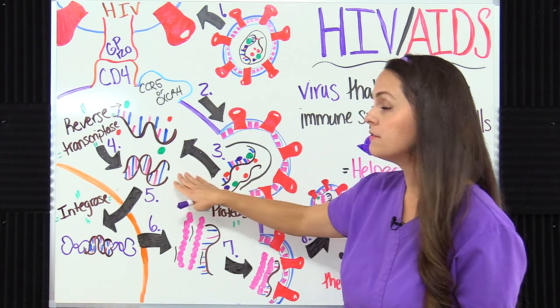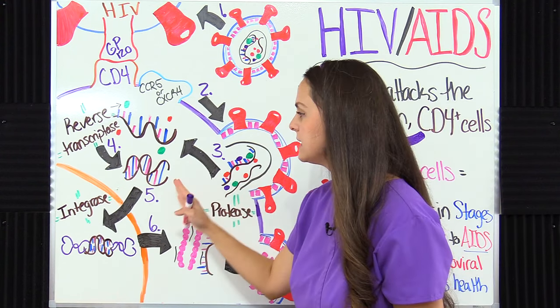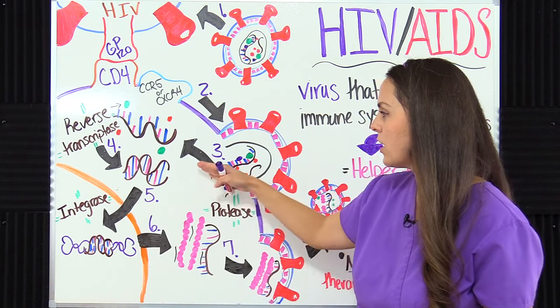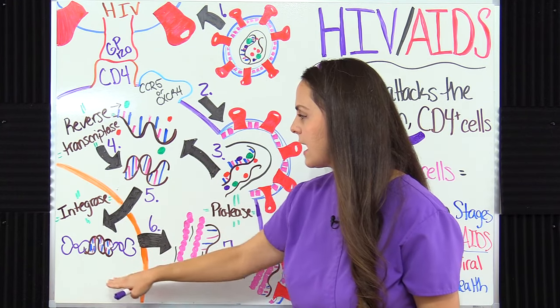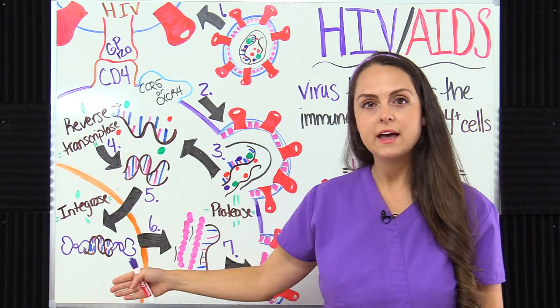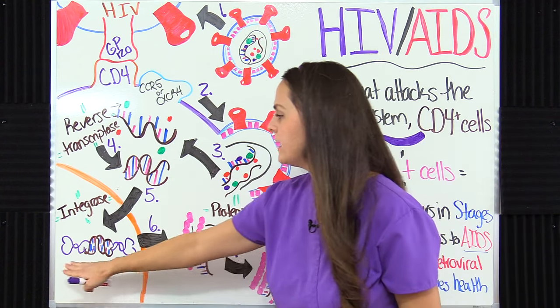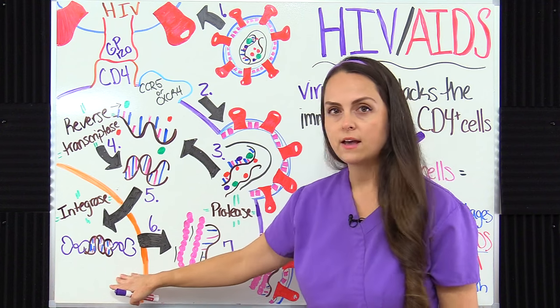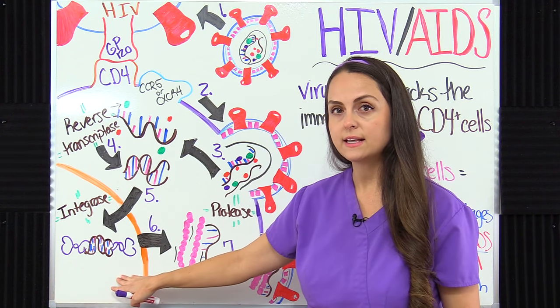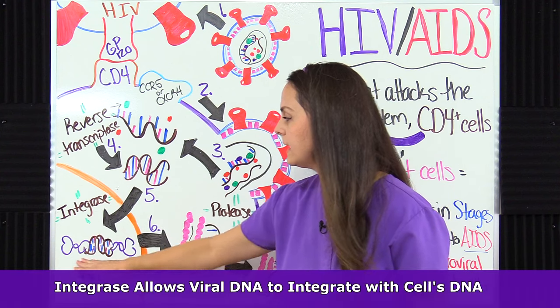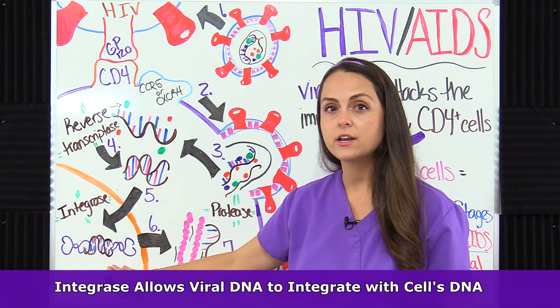This viral DNA now needs to integrate itself inside the cell's nucleus. It moves to the nucleus, gets inside, and releases another enzyme it brought along — integrase. Integrase allows the viral DNA to integrate inside the cell's own DNA, so now HIV has taken over the cell and can control its function.